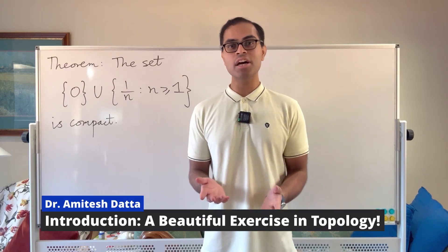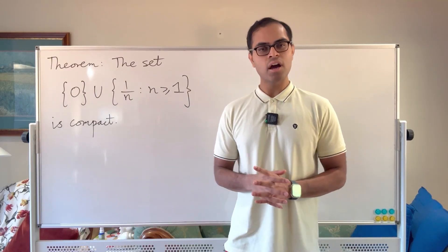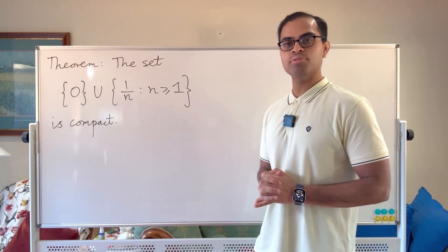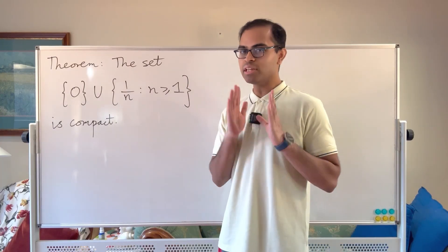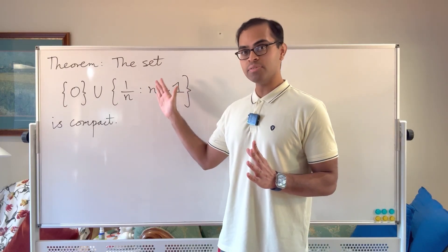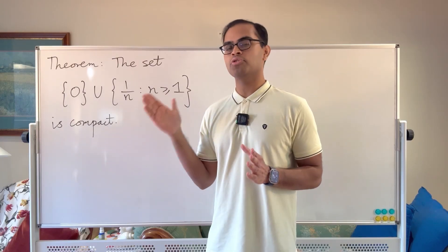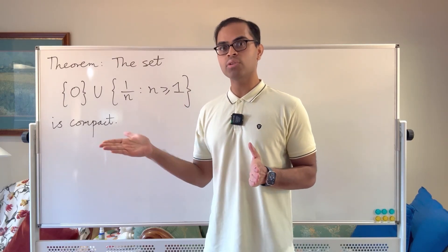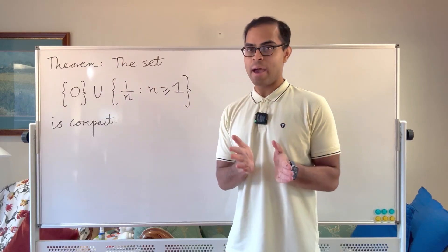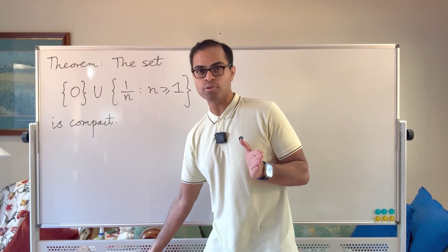This video is an introduction to topology and the topic of compactness. I'm going to introduce everything from scratch and give you a rigorous mathematical proof of the following theorem: the set consisting of zero and all numbers of the form one over n, where n varies over all natural numbers — one half, one third, one fourth, one fifth, etc., together with zero — is a compact set.